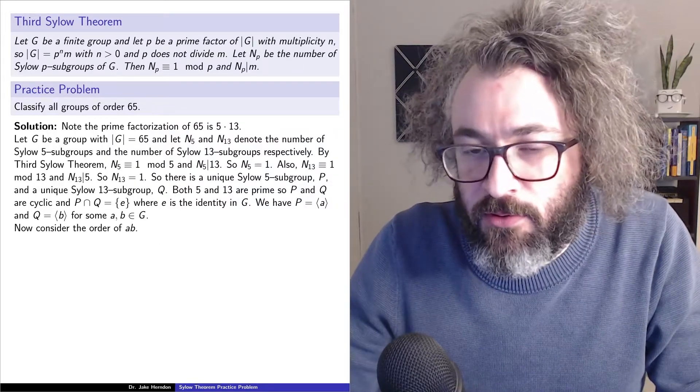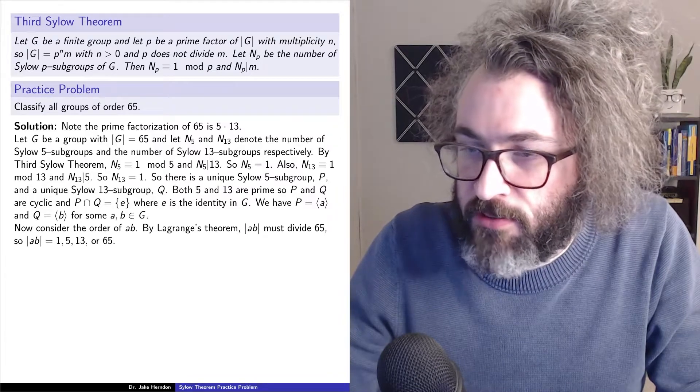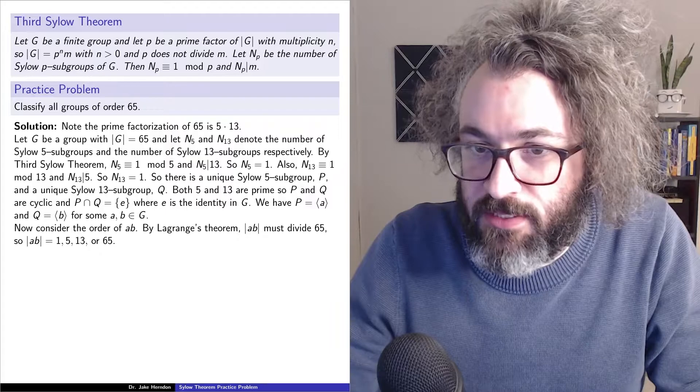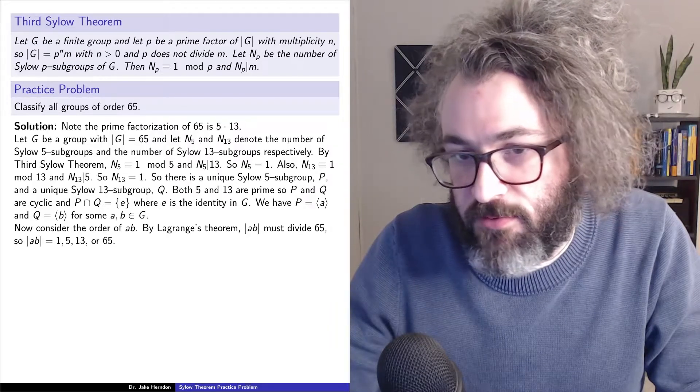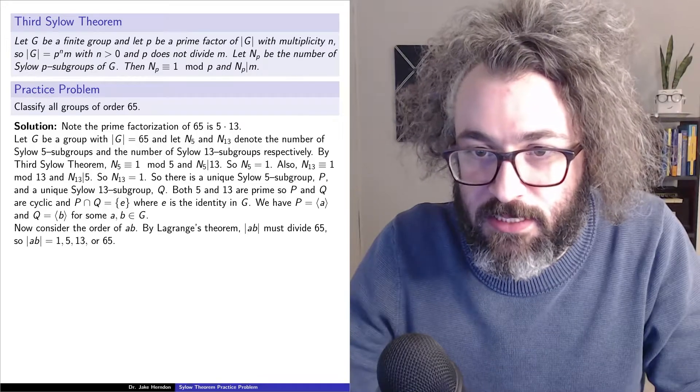All right, so now consider the order of a times b. By Lagrange's theorem, the order of a times b must divide 65. So the order of a times b is equal to 1, 5, 13, or 65.